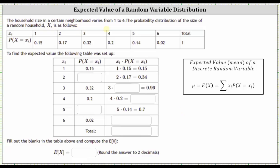A household size in a certain neighborhood varies from one to six. The probability distribution of the size of a random household X is as follows. Notice in the first row we have the possible household size. In the second row we have the corresponding probability. Our goal here is to find the expected value or mean.